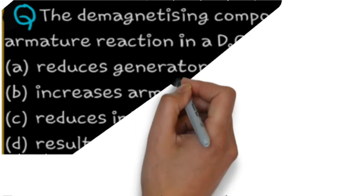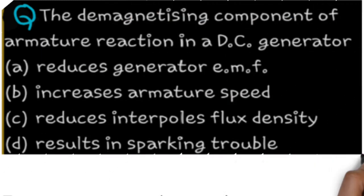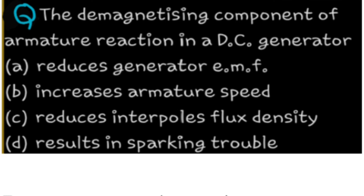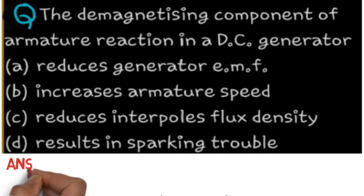MCQ 3: The demagnetizing component of armature reaction in a DC generator: (A) reduces generator EMF, (B) increases armature speed, (C) reduces interpole flux density, or (D) results in sparking trouble. The answer is A — the demagnetizing component of armature reaction in a DC generator reduces the generator EMF.